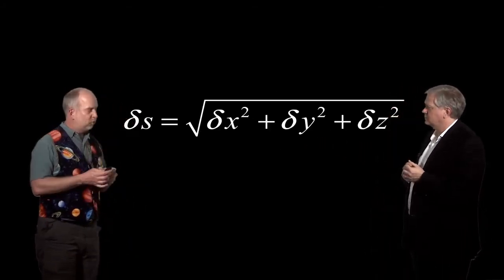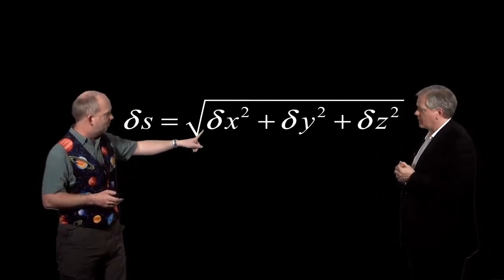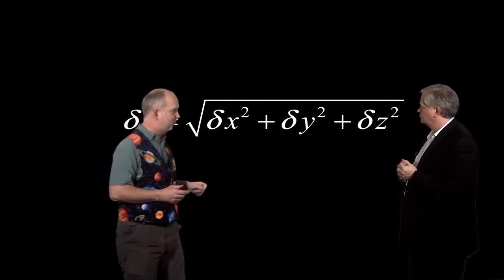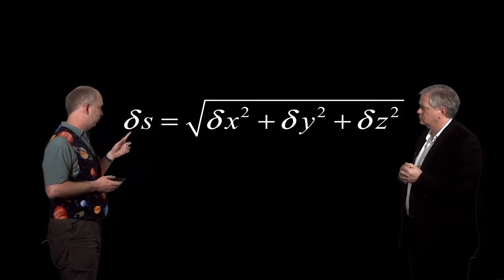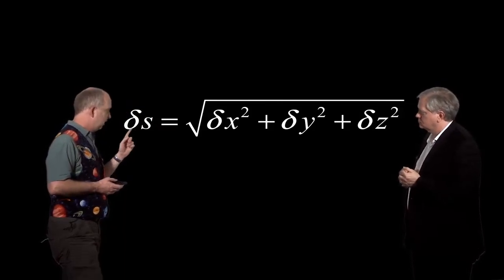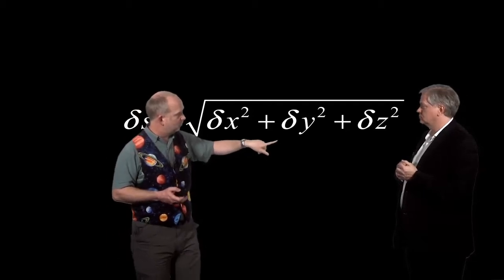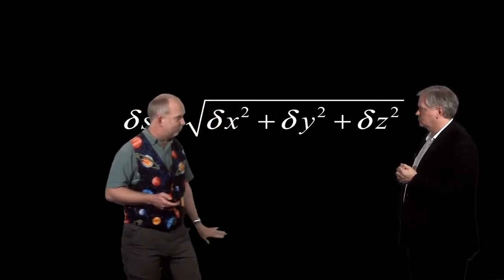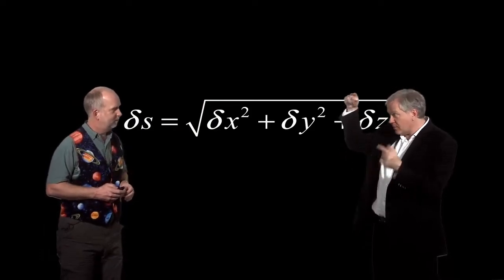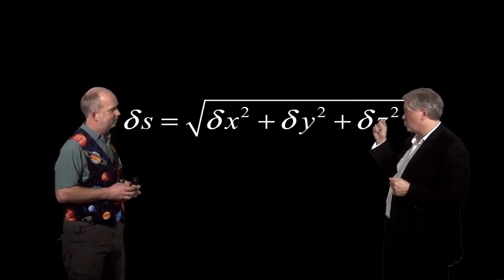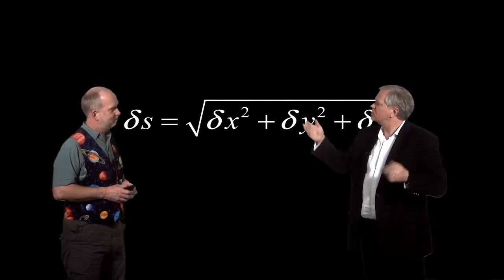We're talking about small distances. So the delta means a small difference in x, a small difference in y, a small difference in z. If you had to go a big distance, you just add up all these small differences as you go. So this is just Pythagoras' theorem: the distance δs equals the square root of δx² plus δy² plus δz². If you have a three-dimensional triangle, that's how long the hypotenuse is.